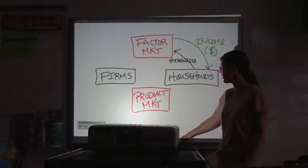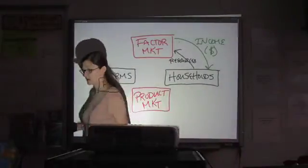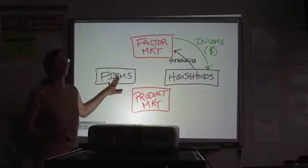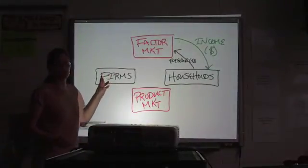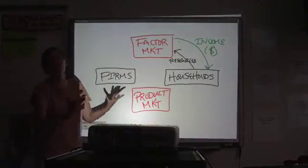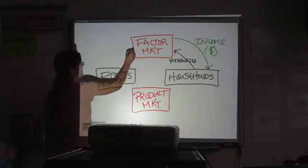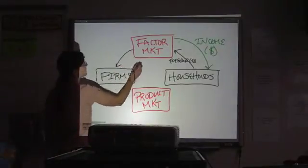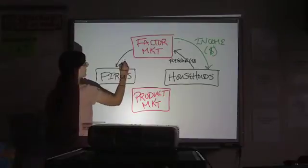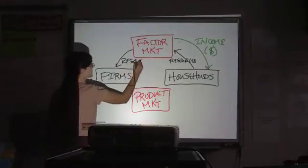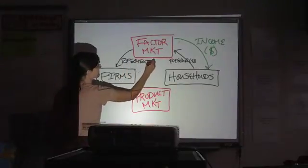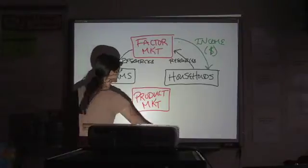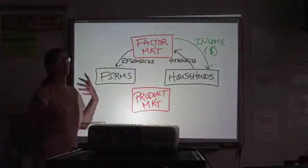Now, where are these resources going? Firms or businesses buy the resources to make stuff that people want. So we have the resources coming through the factor market to the firms. Again, resources, factors of production, same thing. And in exchange for that, they are paying for them.